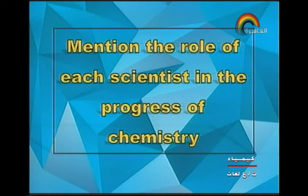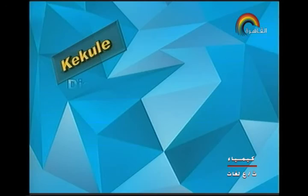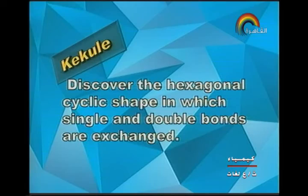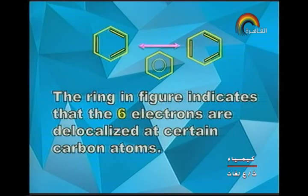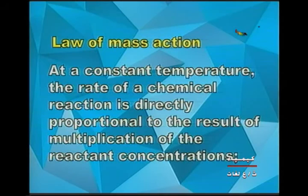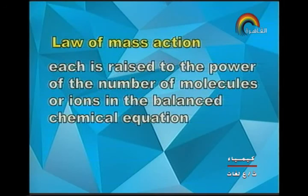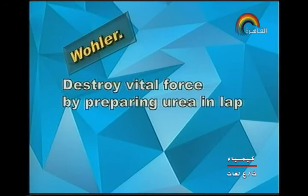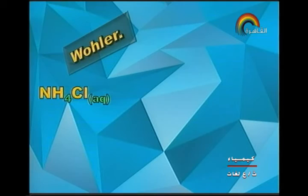Next type of question: mention the role of each scientist in the progress of chemistry. Kekulé: discovered the hexagonal cyclic shape in which single and double bonds are exchanged, as shown on screen; the ring indicates six electrons are delocalized across the carbon atoms. Guldberg and Waage: made the law of mass action, stating that at constant temperature the rate of chemical reaction is directly proportional to the product of reactant concentrations, each raised to the power of the number of molecules in the balanced equation.